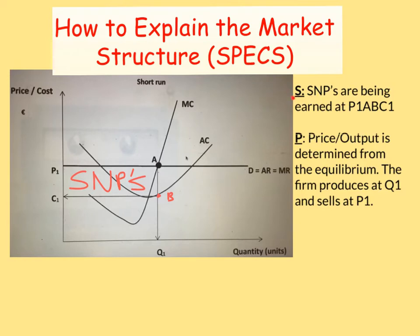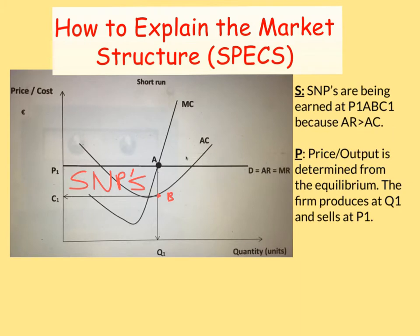The first part of SPECS — S — stands for SMPs being earned at P1, A, B, C1. That outlines the whole rectangle, which is the first thing to describe. SMPs — supernormal profits — are being earned because AR is greater than AC. You can see the AR curve and the average cost curve with a gap between the two of them.